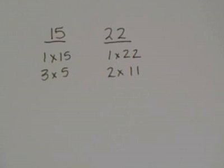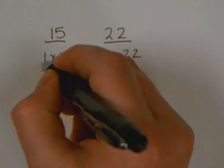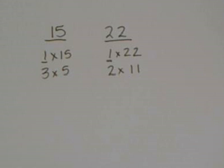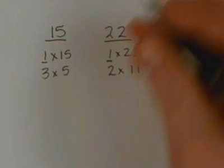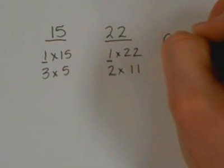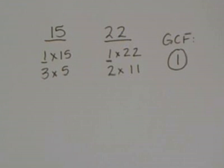Now I need to look and find the greatest number that they both have listed. Well, they both have a 1 and that's it. This will happen sometimes. It throws kids off really bad when 1 is their greatest common factor, but that happens. So it's okay if their greatest common factor is 1, and in this case it is.